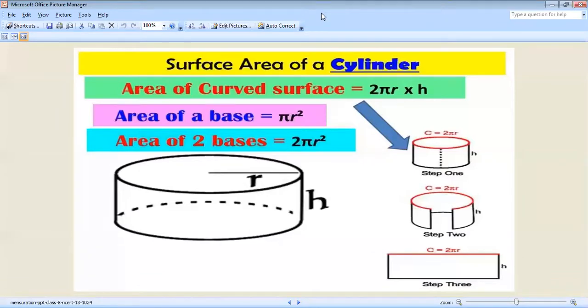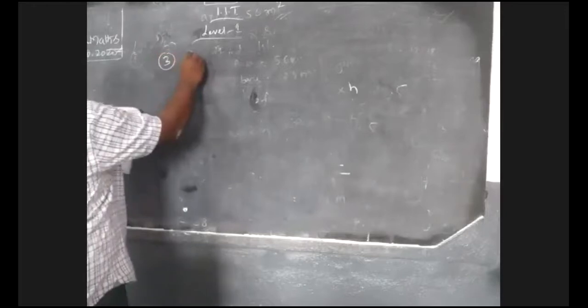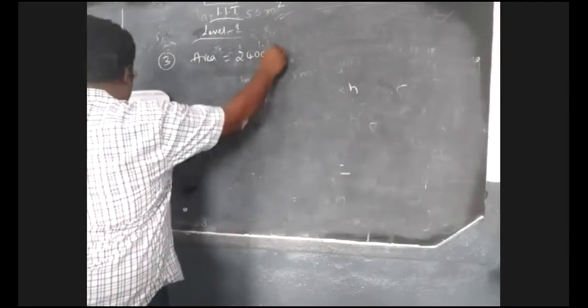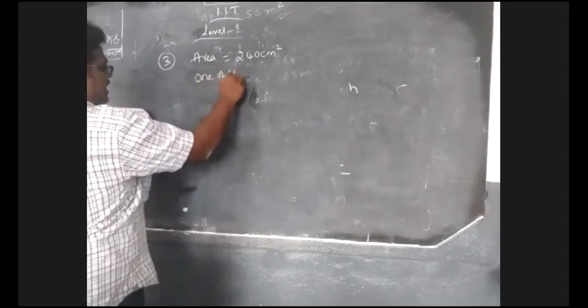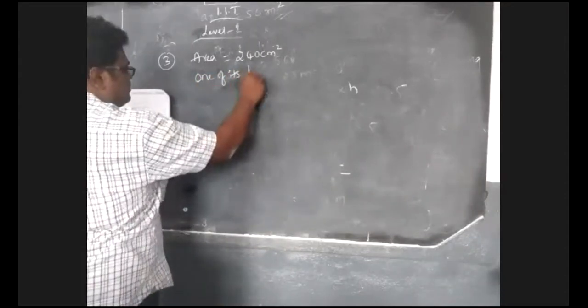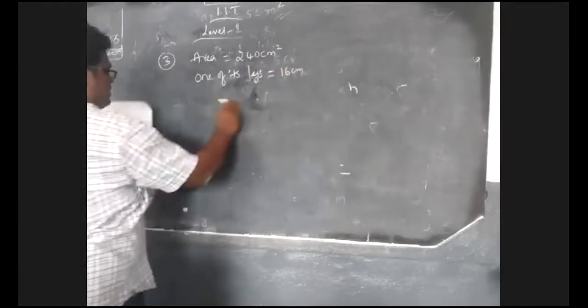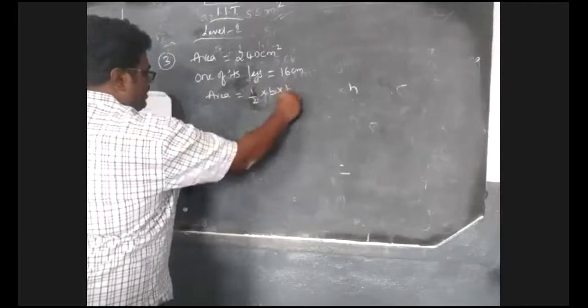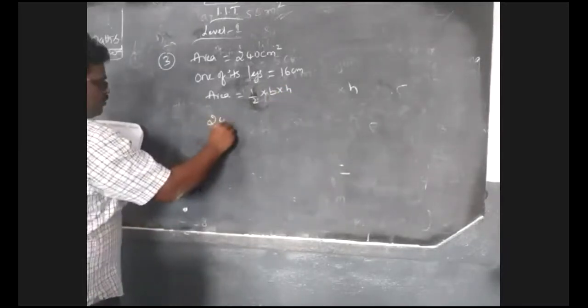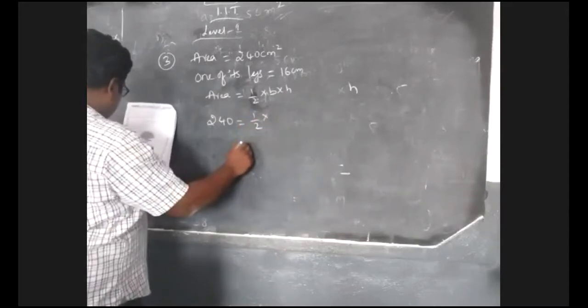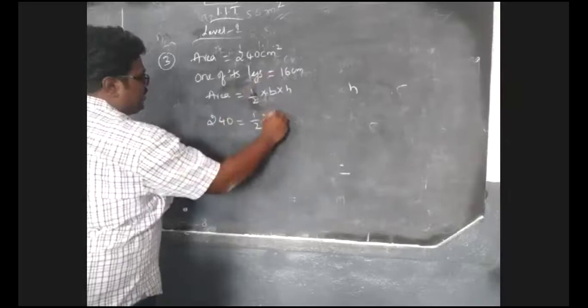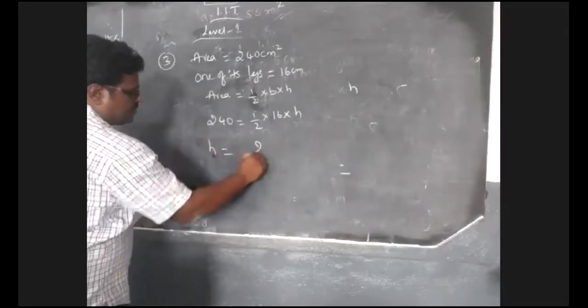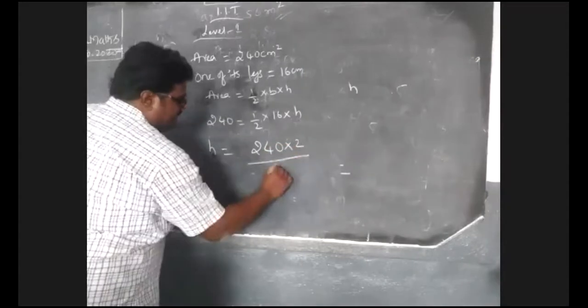The area is 240 cm squared. One of its legs is 16 cm. So what is the formula for the area? Half into base into height. Here we have 240 equals to half into, what is the base we have? 16 cm. H is the height we have to find.